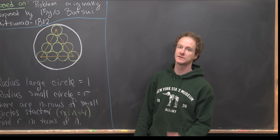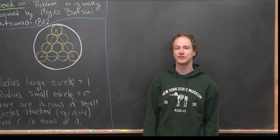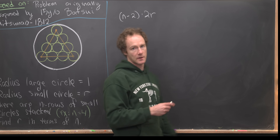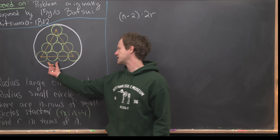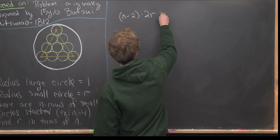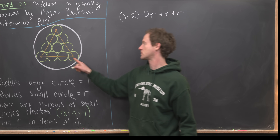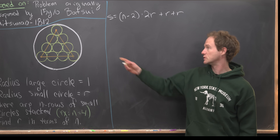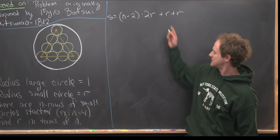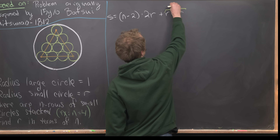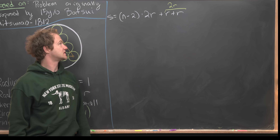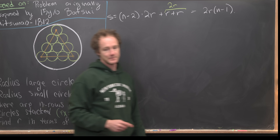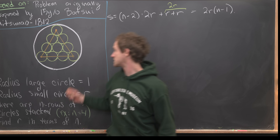Assuming we have n total rows, our last row has n circles in it. So putting that together, we have (n minus 2) times 2r for all the inner circles, plus r plus r for the first and last circles. Simplifying: r plus r is 2r, so we have (n minus 2) times 2r plus one times 2r, which adds up to 2r times (n minus 1). That's our first expression for the side length s of this equilateral triangle.